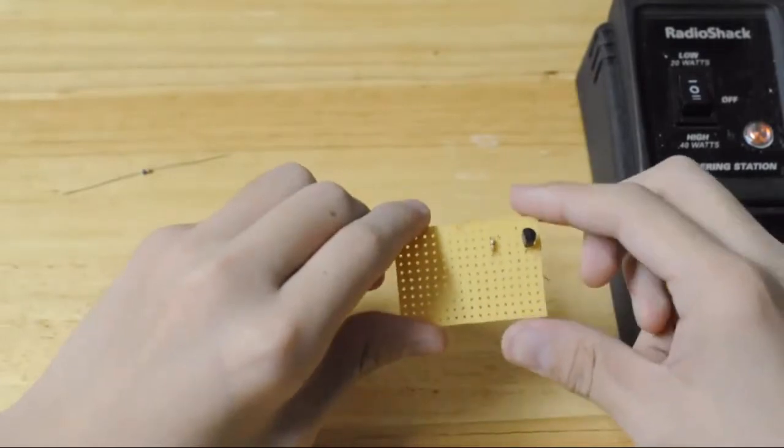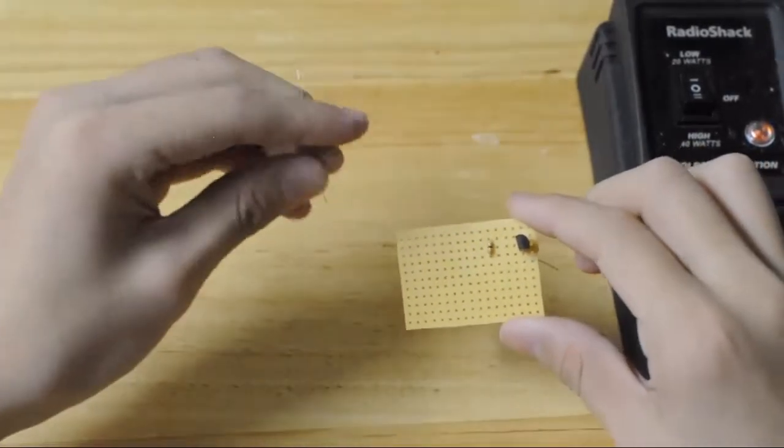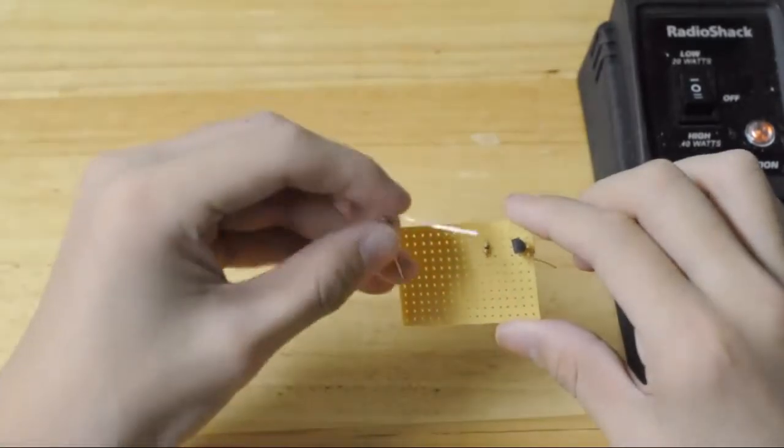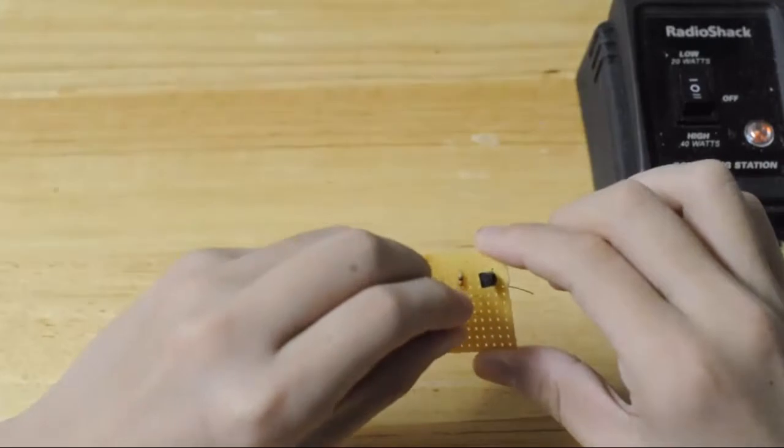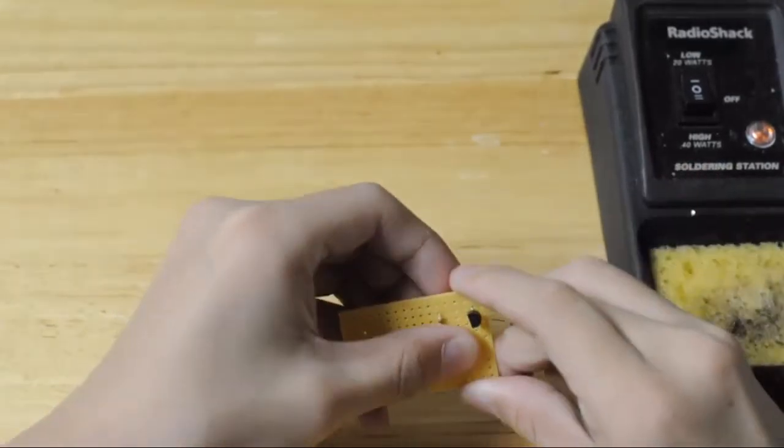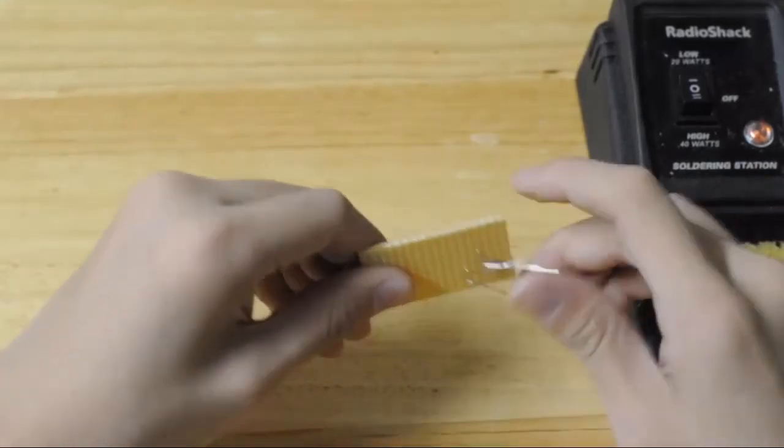Next take your 5600 ohm resistor and you need to put it in the middle of the 33 ohm resistor and the transistor only a little bit below. Now when you insert this in, you need to also fold the legs back so that it stays in place.